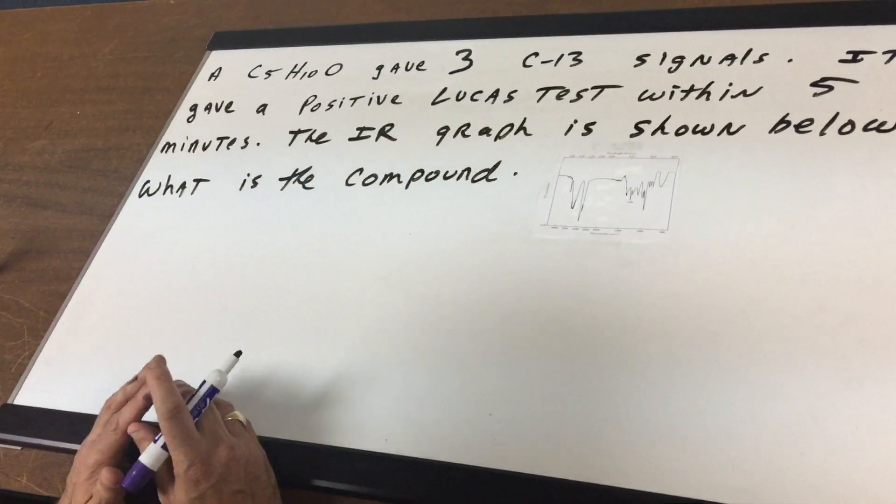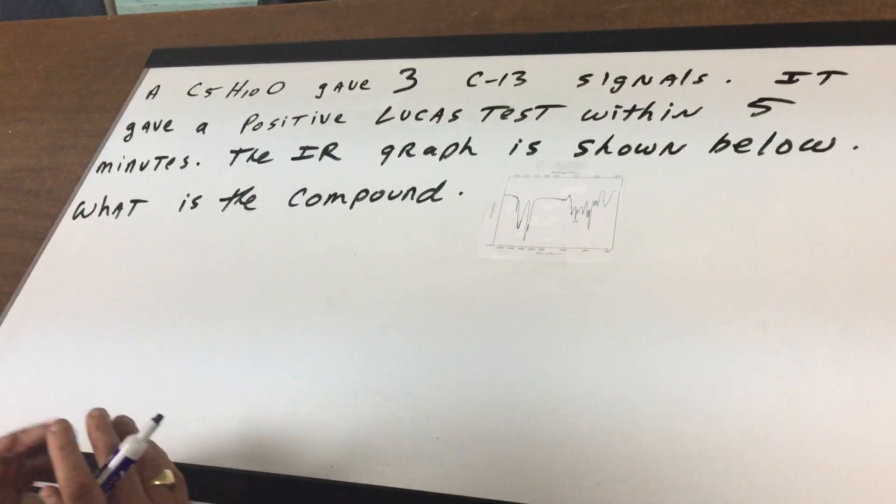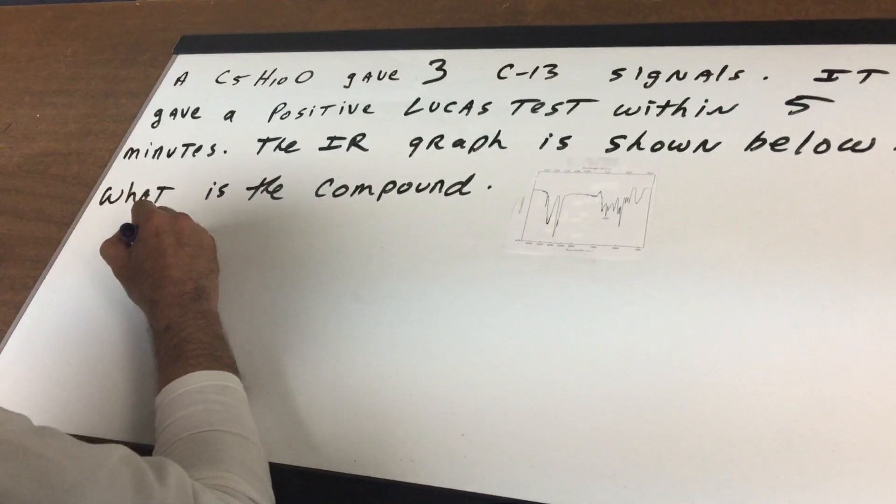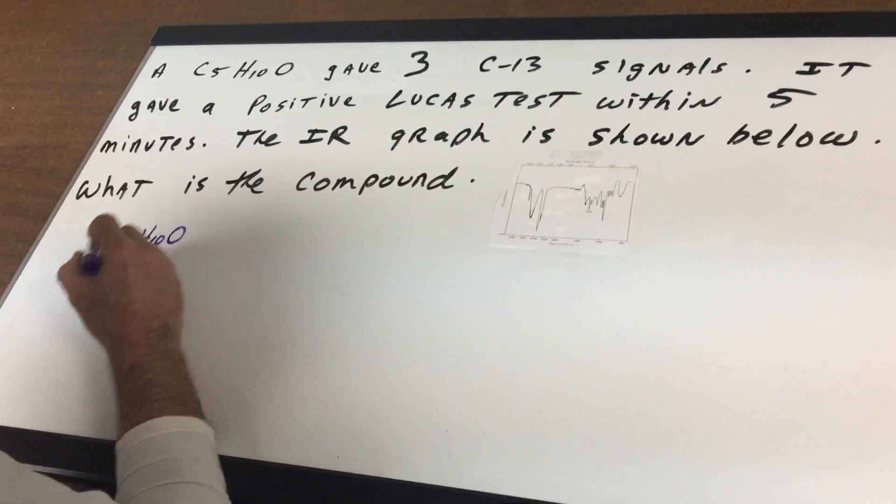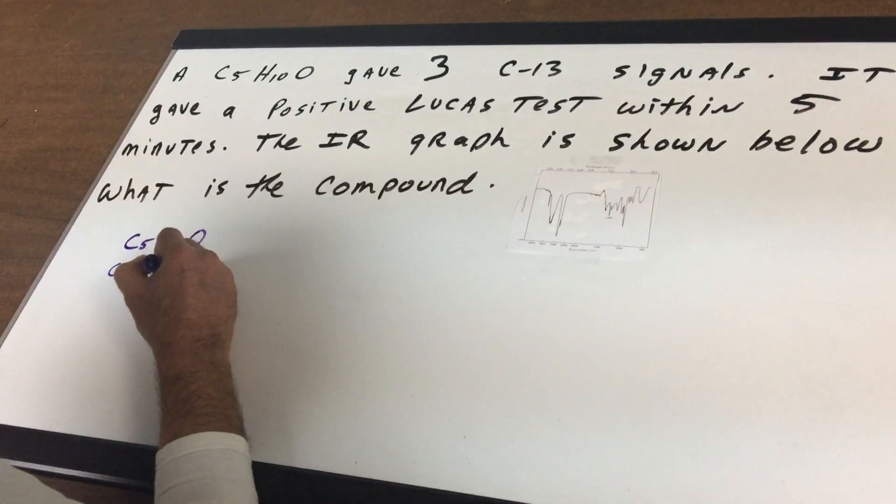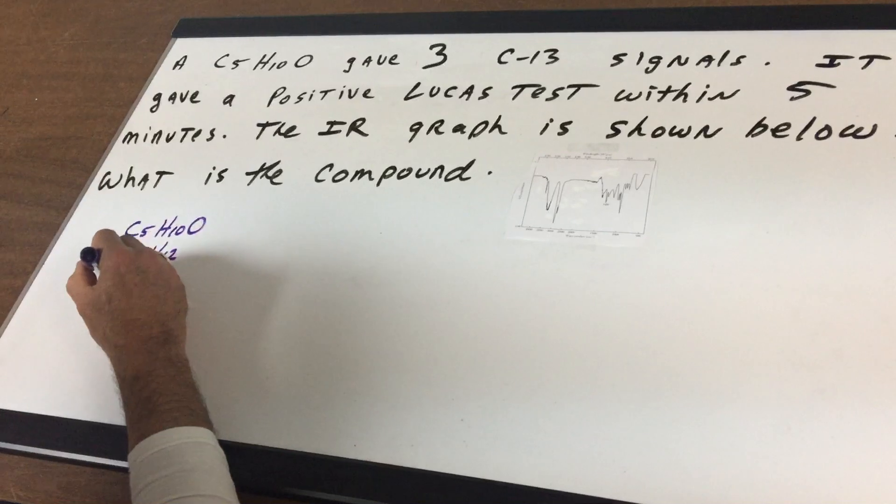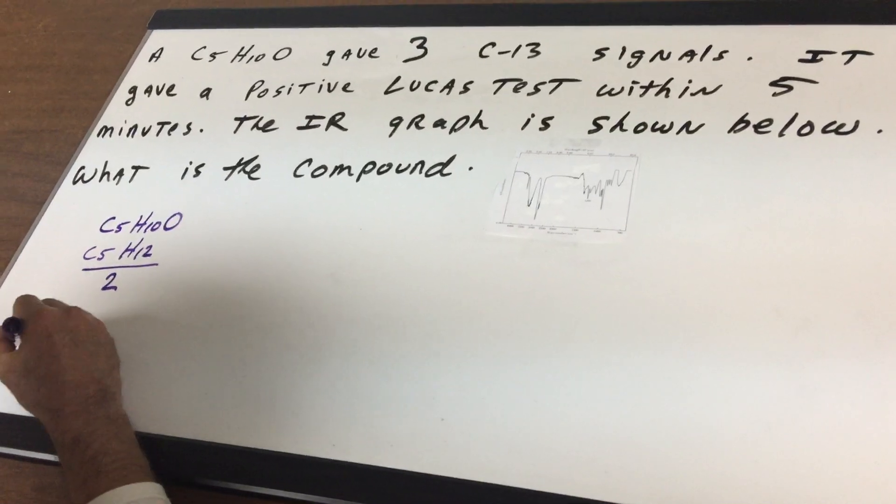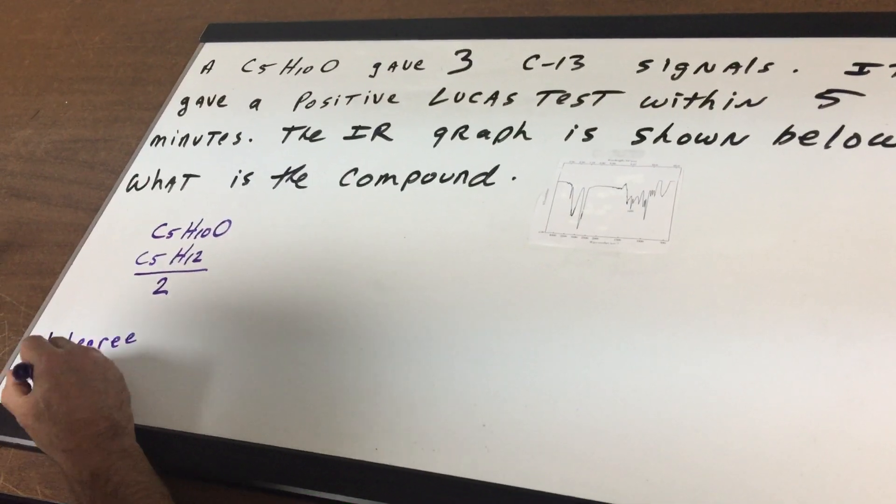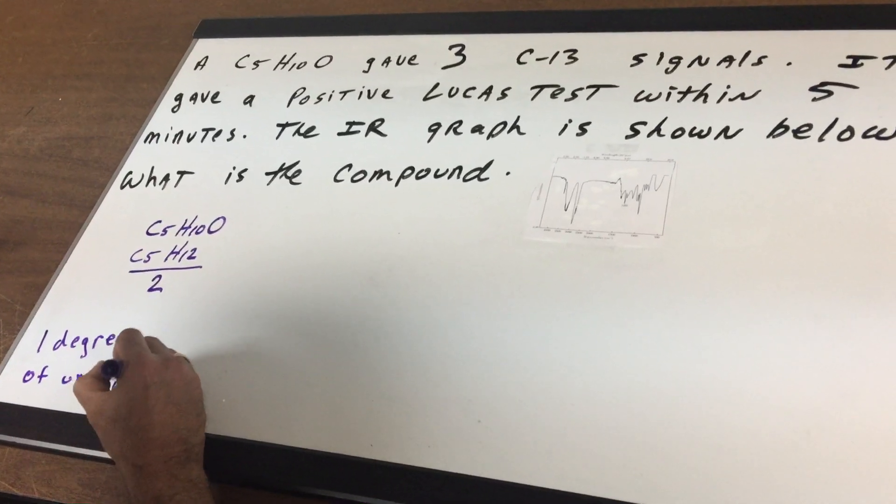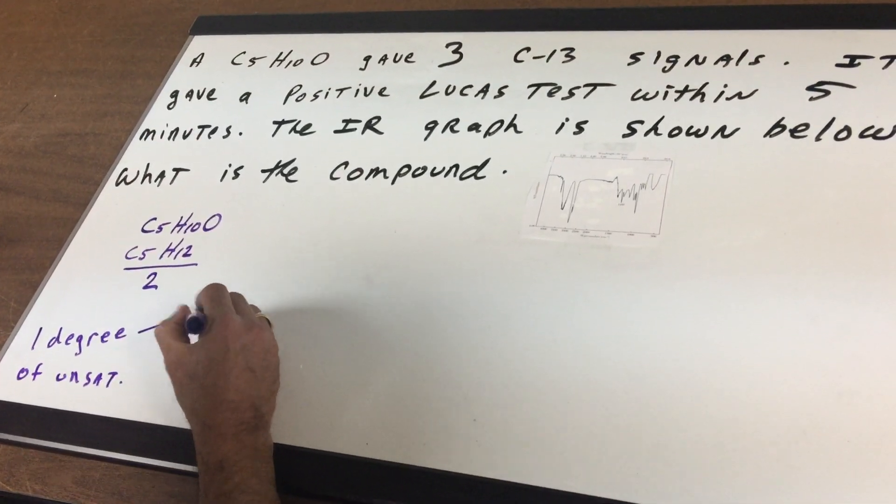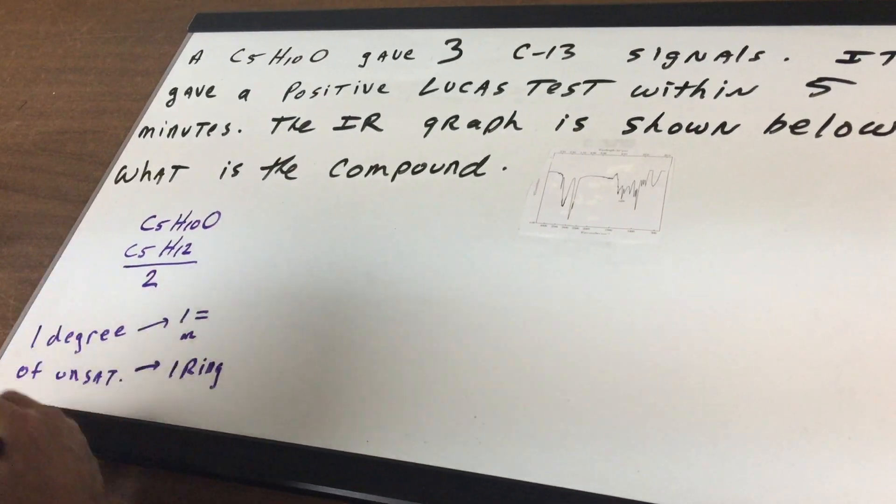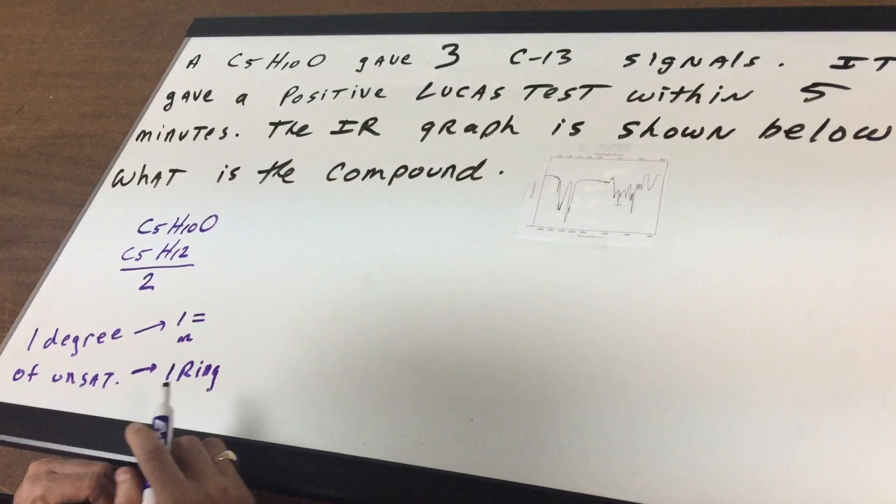The first thing that you're going to need to do is to calculate the degree of unsaturation in this compound. I've shown this on another tape, so I'm going to do it quickly. I write down the given and underneath I write the nearest alkane, which is double plus two, ignore the O. The difference of H's is two and cut it in half. So that means there is one degree of unsaturation.